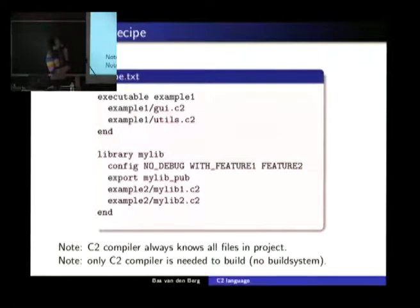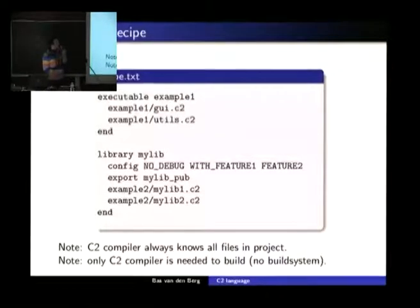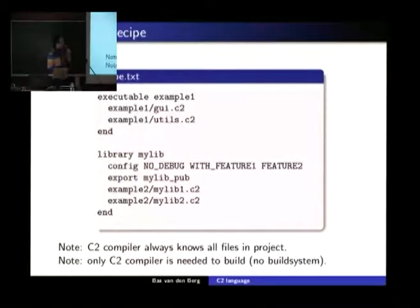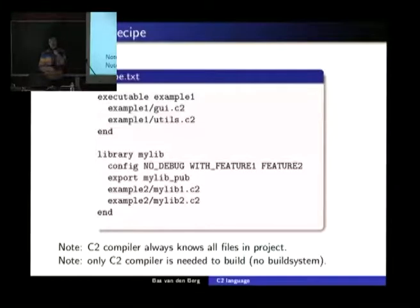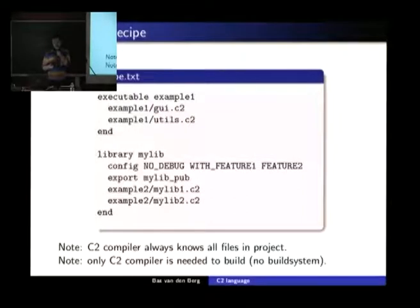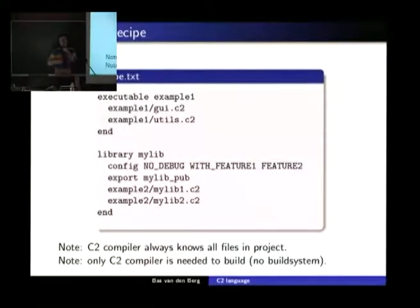Here we have an executable called example one — it has two files and you can build it. The second one is a library; it has some defines, like minus capital D for people who know that, and they're used when compiling these files. There's also an export entry that dictates to the compiler which symbols of these files to export outside, so they're visible and you can use them if you're linking to this library.